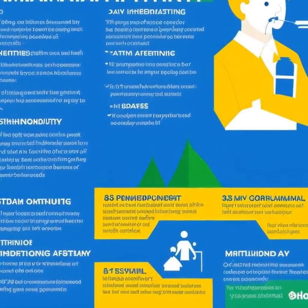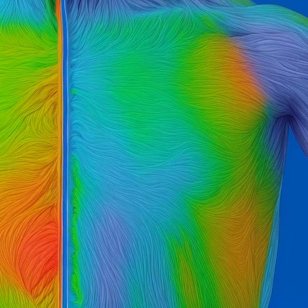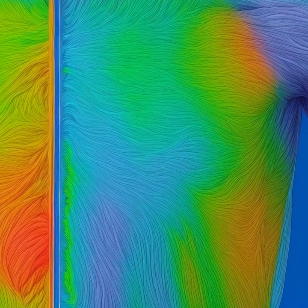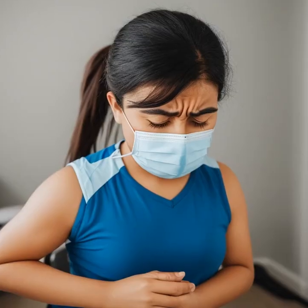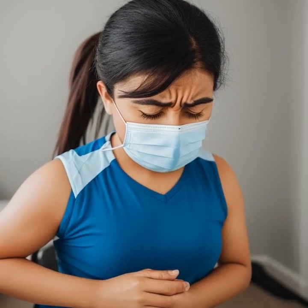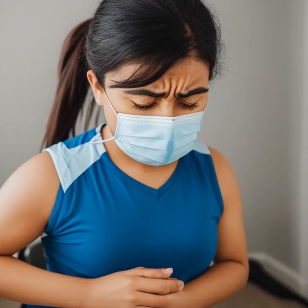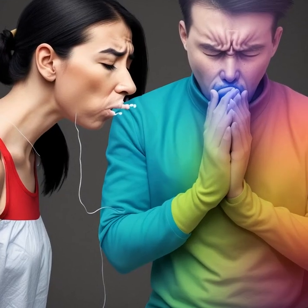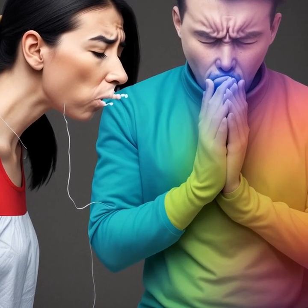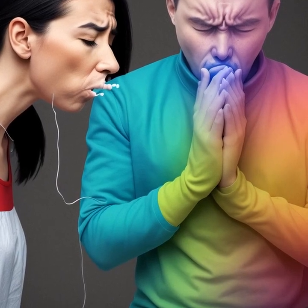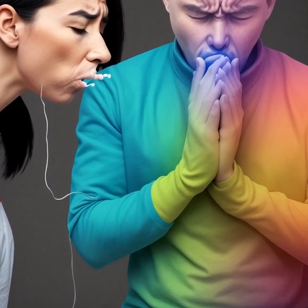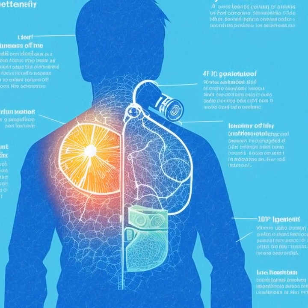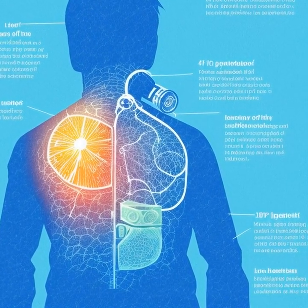Spirometry is a common test used to assess how well the lungs are working by measuring the amount and speed of air a person can inhale and exhale. The limitations on airflow and oxygen exchange can have a significant impact on overall respiratory health. People with asthma may experience shortness of breath, chest tightness, coughing, and wheezing. These symptoms can affect daily activities and even lead to nighttime awakenings, resulting in poor sleep quality.